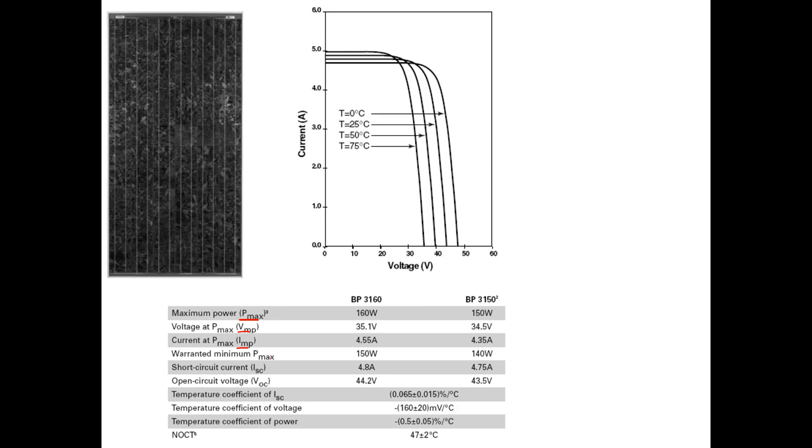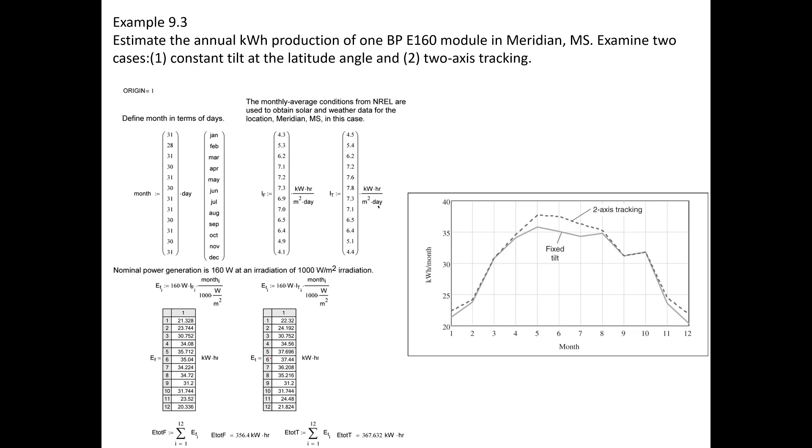To conclude, I'm going to go ahead and do one more example problem, but I'm not in this case going to work out the problem. I'm just going to kind of go through the solution that's already laid out in the book as an illustration. This problem itself just asks for the annual kilowatt hours produced out of one BP E160 module in Meridian, Mississippi. Again, that's the photovoltaic cell given in this chart here.